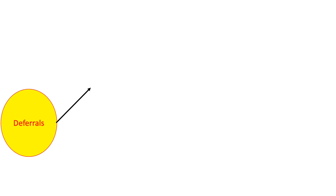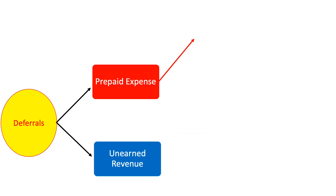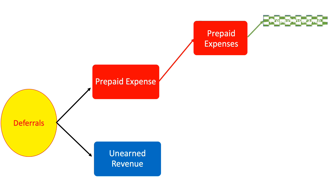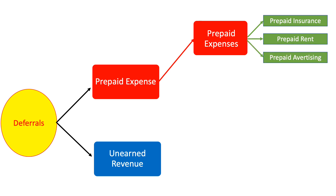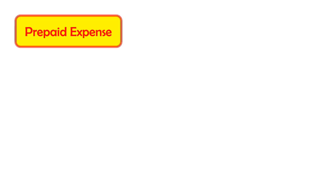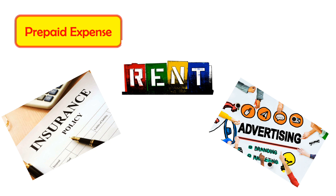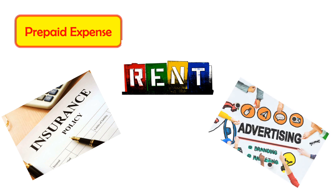Let's take a closer look at our deferrals. In our deferrals, we have prepaid expenses and unearned revenues. In the prepaid expenses, we have prepaid insurance, prepaid rent, and prepaid advertising. We also have supplies and depreciation. Prepaid expenses are expenses paid in advance. The prepayment word means that we paid for something that will eventually become an expense with time.